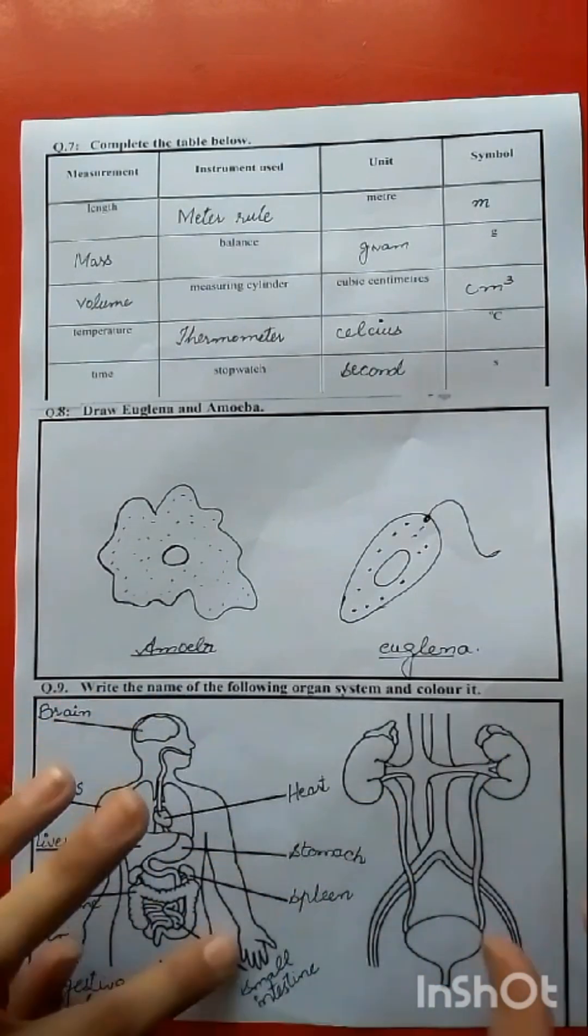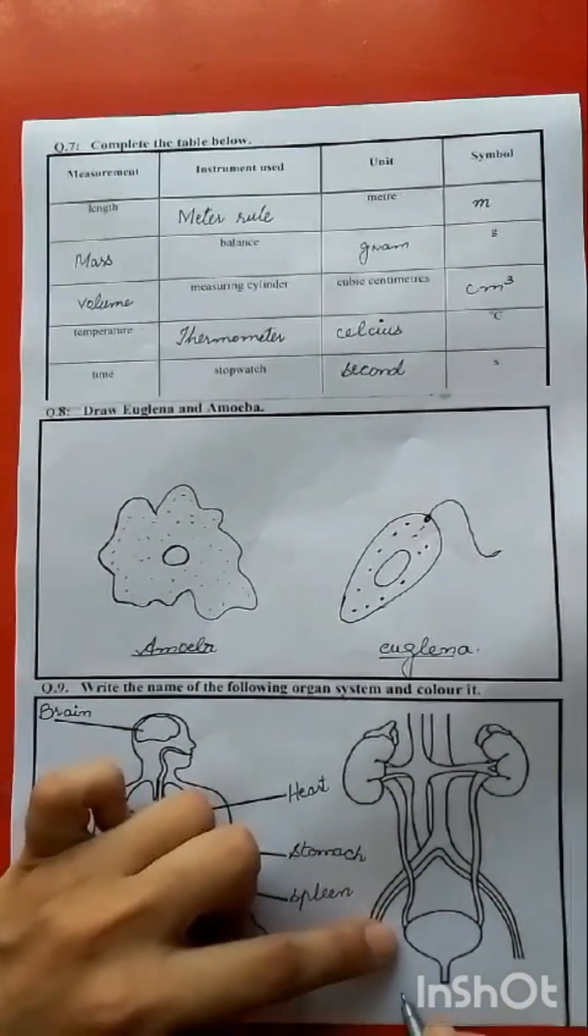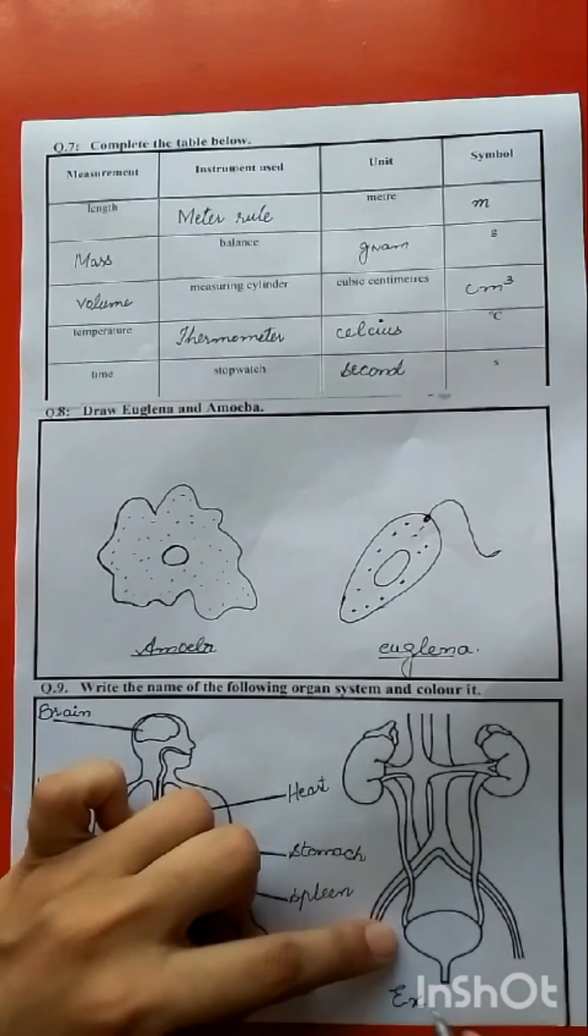Next, you should see kidneys, blood, urethra, all there. Excretory system. We will mention that excretory system.